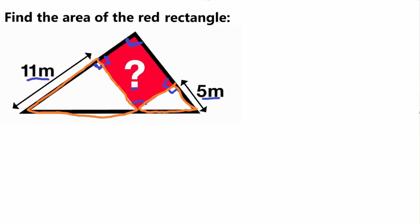Now if we look at these two triangles, they seem similar — meaning their angles are the same. They look identical in proportion, though not in size. However, we need to be able to prove that.